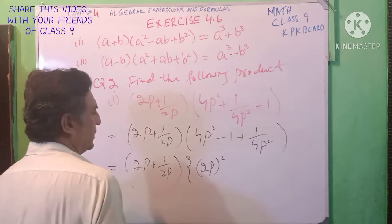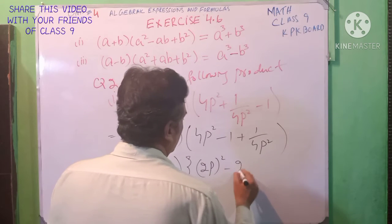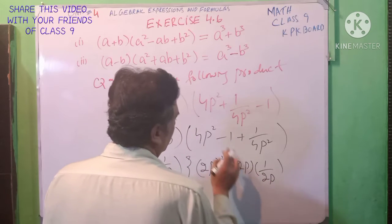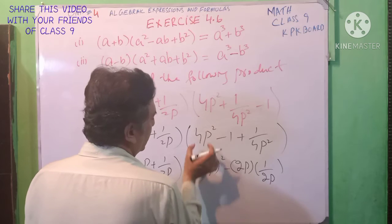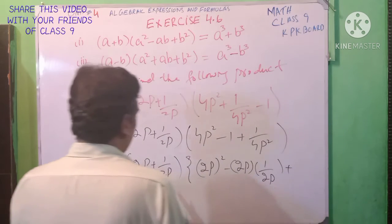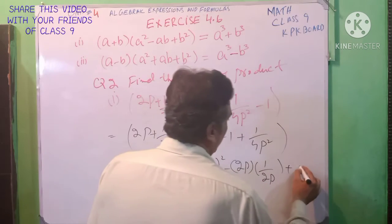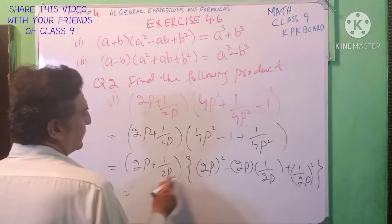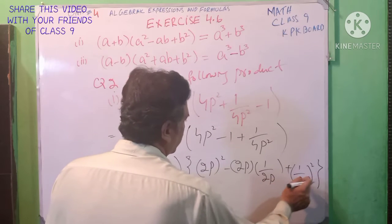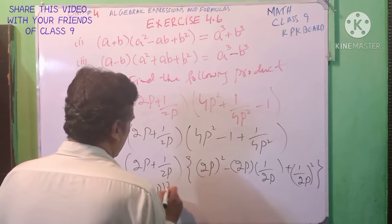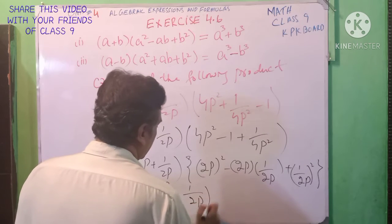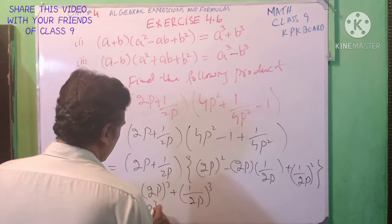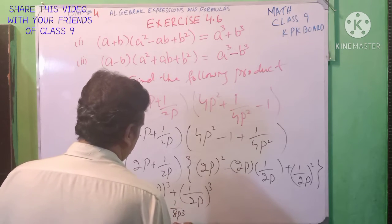a is 2p², b is 1/(2p). Minus ab: 2p and 1/(2p) — یہ cancel ہو جاتے ہیں — so 4p square. b square: 1/(2p) whole square. a plus b, a square minus ab plus b square gives a cube plus b cube. 2 cube equals 8p cube, plus 1 by 8p cube. This is our required answer.